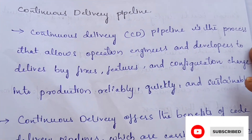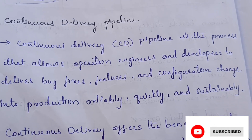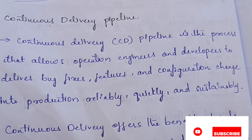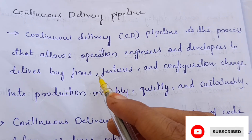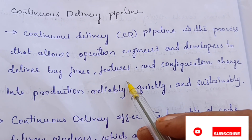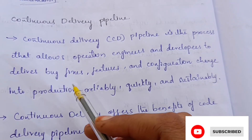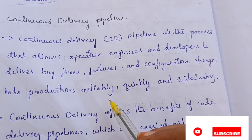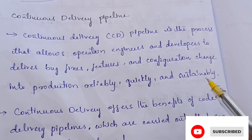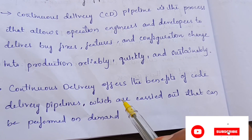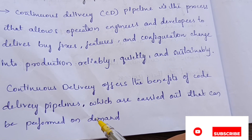Now let us discuss about the continuous delivery pipeline. A continuous delivery pipeline is a process that allows operation engineers and developers to deliver bug fixes, features, and configuration changes into production reliably, quickly, and sustainably. Continuous delivery offers the benefits of code delivery pipelines that can be performed on demand.